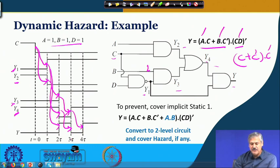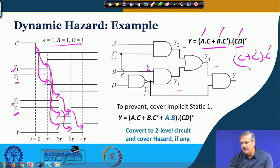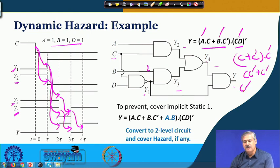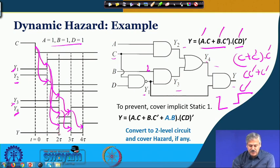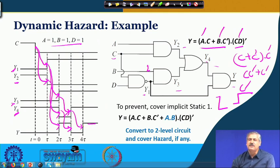The underlying logic reduces to C·C-prime plus C-prime, which simplifies to just C-prime. So when C changes from 1 to 0, the output should go from 0 to 1 in one transition. But instead, the output goes from 0 to 1, then back to 0, and then to 1 again — making multiple transitions instead of one. This is dynamic hazard.